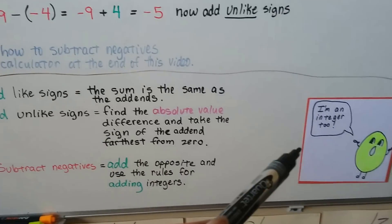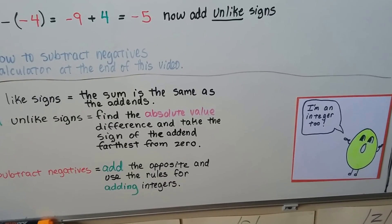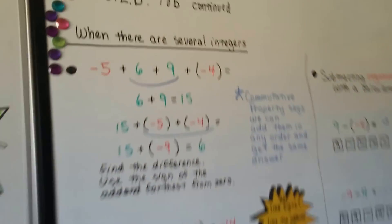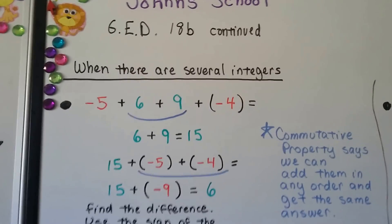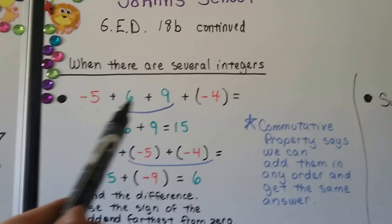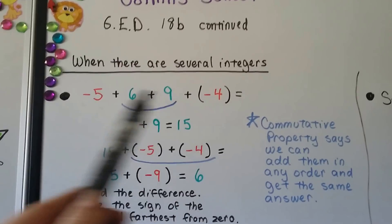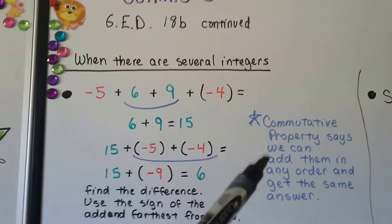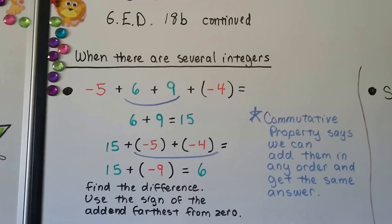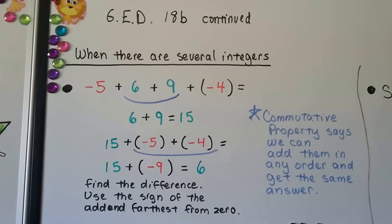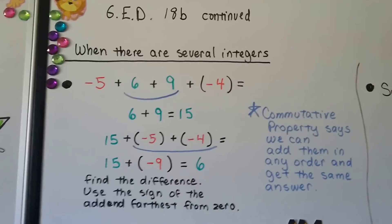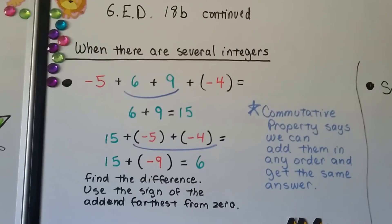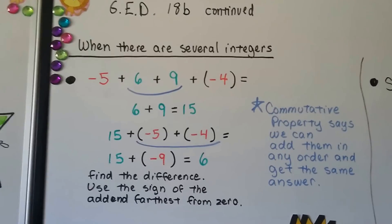Remember that zero is an integer too. When there are several integers — if we're adding positives and negatives and there's several of them — the commutative property says we can add them in any order and get the same answer. For example, 2 plus 3 is 5 and 3 plus 2 is 5. It doesn't matter which comes first; when we add them together, they're both 5.